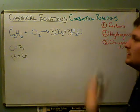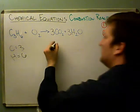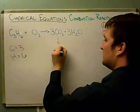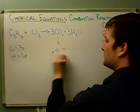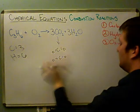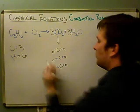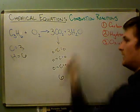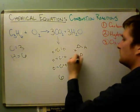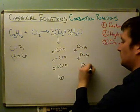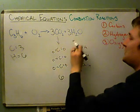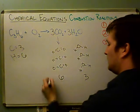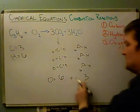Now the only thing left to balance is the oxygens. I'm going to count up how many oxygens I have on the product side. We have three CO₂ molecules, each with two oxygens — that's six oxygens. And then we have three H₂O molecules for a total of three oxygens. Don't worry about the double lines — that's for another lesson. So the total number of oxygens on the product side is six plus three, which is nine.